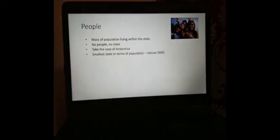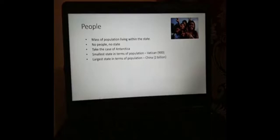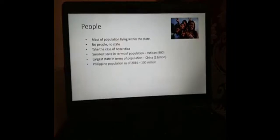The smallest state in the world in terms of population is the Vatican. It has a population of just 900. Can you imagine that there are more Malayan students on campus than there are in that state? The largest state in terms of population is China, which has more than 2 billion population. The Philippines is somewhere in the middle — we had a 100 million population in 2016, and by now it's probably close to 110 million.